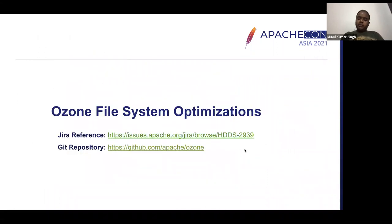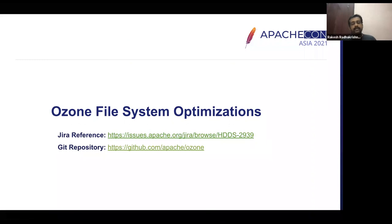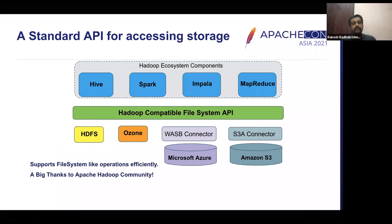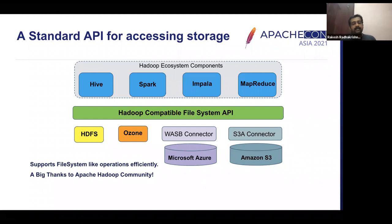I'll be handing over to my friend Rakesh, who will go into more details about how this feature has been implemented. Thanks Mukul. Hello everyone. I'm going to talk about the file system optimization work that we have done in the Ozone storage system that makes it well suited for big data workloads. This work is already available in the master branch and will be included in upcoming releases. Before we talk about Ozone, I'd like to touch upon the Hadoop compatible file system API. This is the most commonly used API in the Hadoop ecosystem and has most of the commonly used file system operations like creating a file, creating a directory, deleting, and renaming a file and directory.